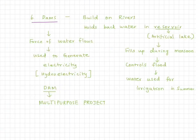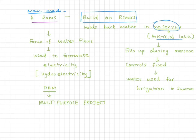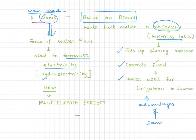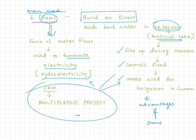Number six: dams are big man-made structures built across rivers to save river water, prevent floods, irrigate lands, generate electricity, and provide revenue to the government. So dams are called multi-purpose projects.